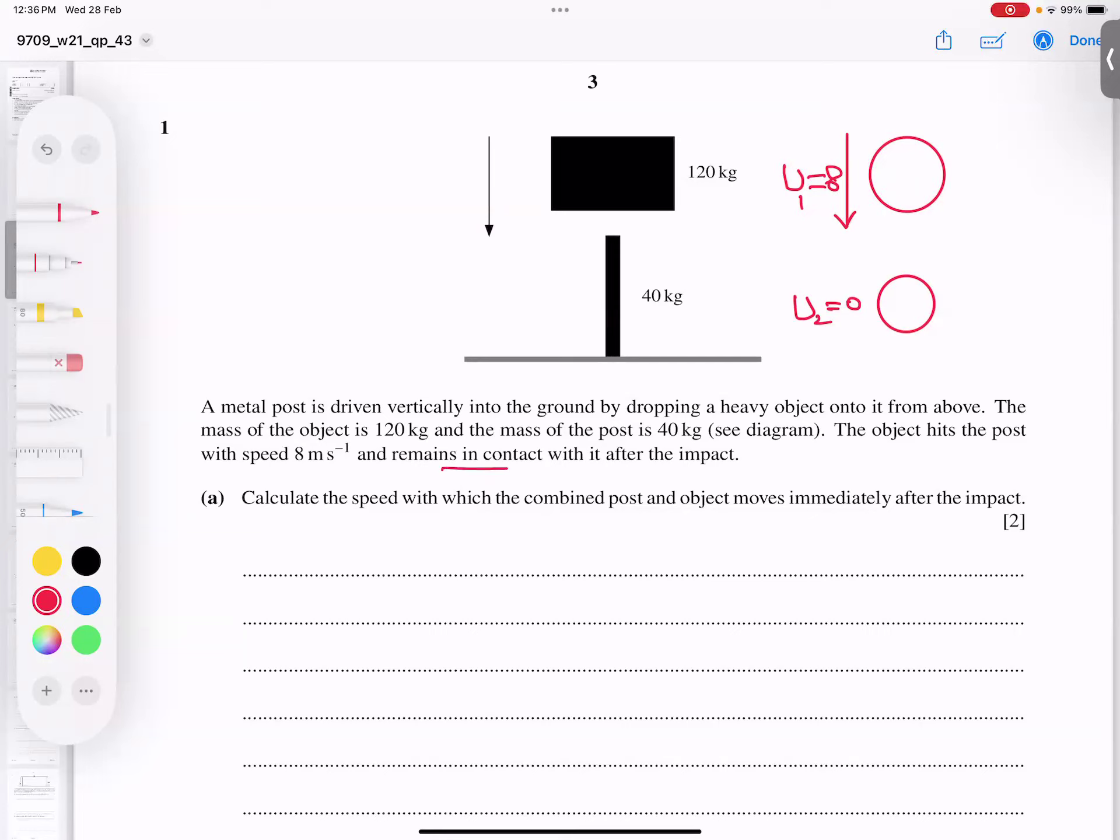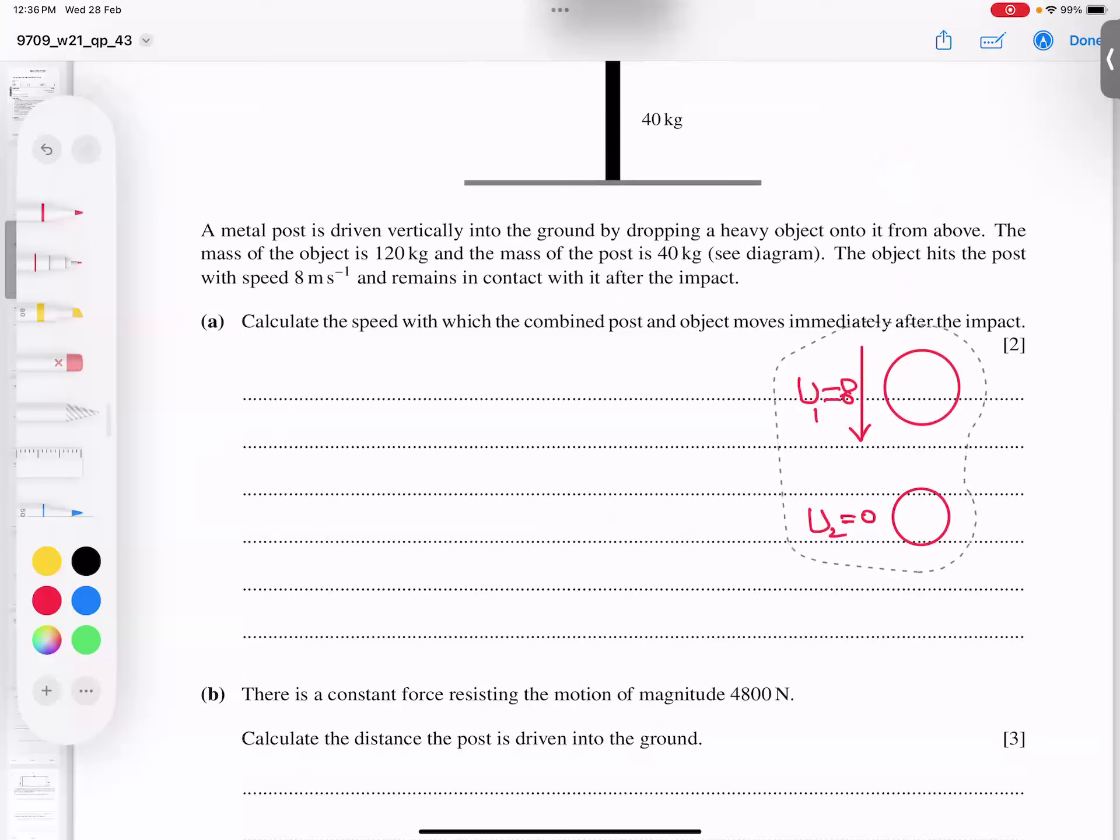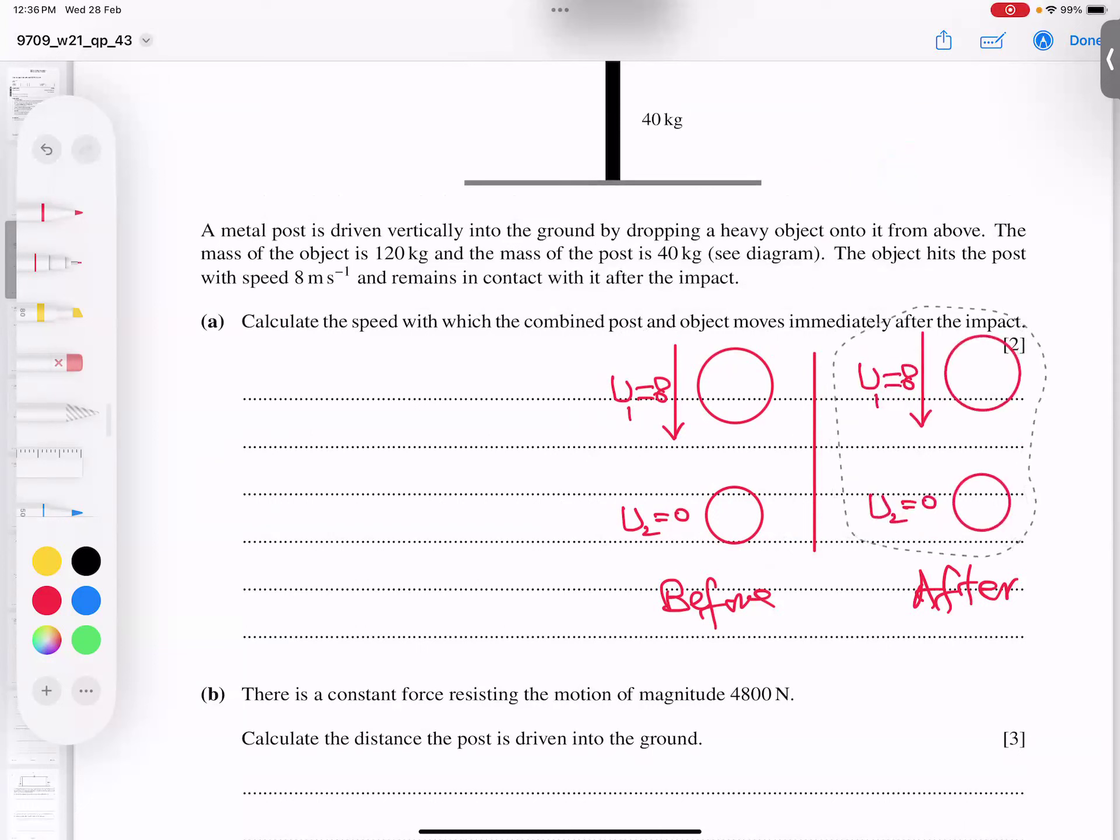He's asking what is the speed of the combined post after impact. It will behave as coalesce, meaning they will behave as a merged combined object, they will behave together. I'll show you this concept. This is before collision, and this is after collision. After collision, you can see both objects will merge.